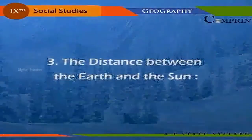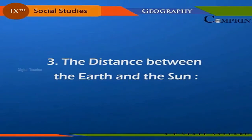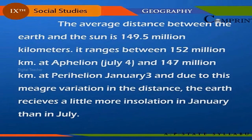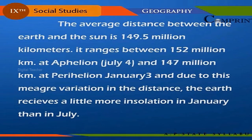The distance between the Earth and the Sun: the average distance is 149.5 million kilometers, ranging between 152 million kilometers at aphelion on July 4th and 147 million kilometers at perihelion on January 3rd. Due to this small variation in distance, the Earth receives slightly more insolation in January than in July.